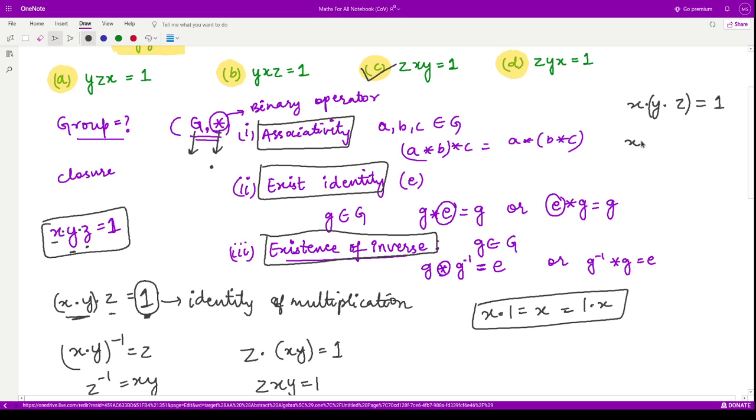In this case, x inverse equals yz, or in other words you can say yz inverse equals x. This is one and the same. In this case you can also write this to be equal to yz and then x, which equals one. So we have this result: yzx equals one. This is the correct option.